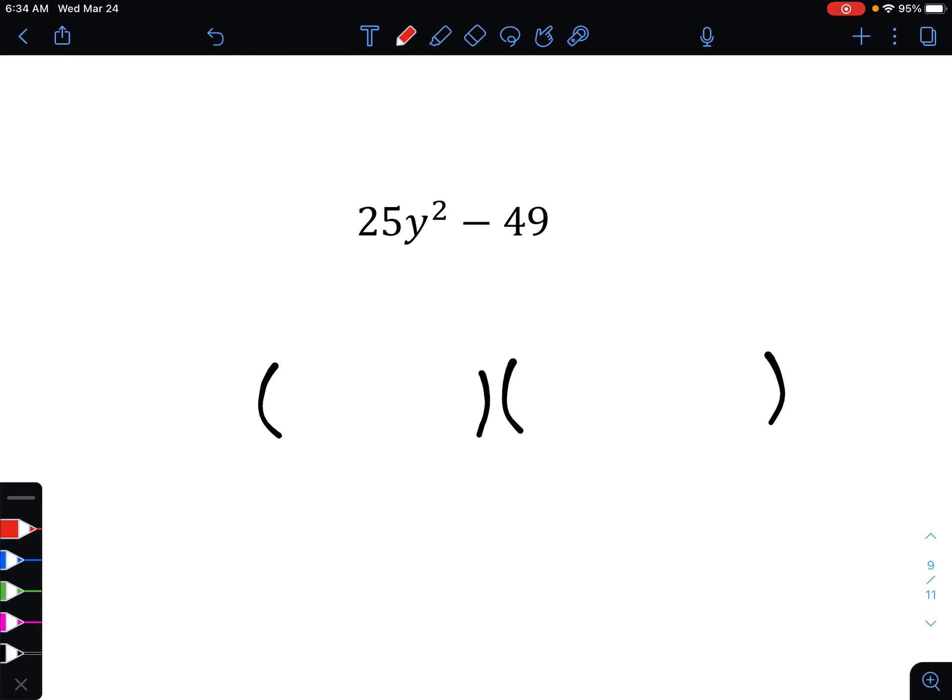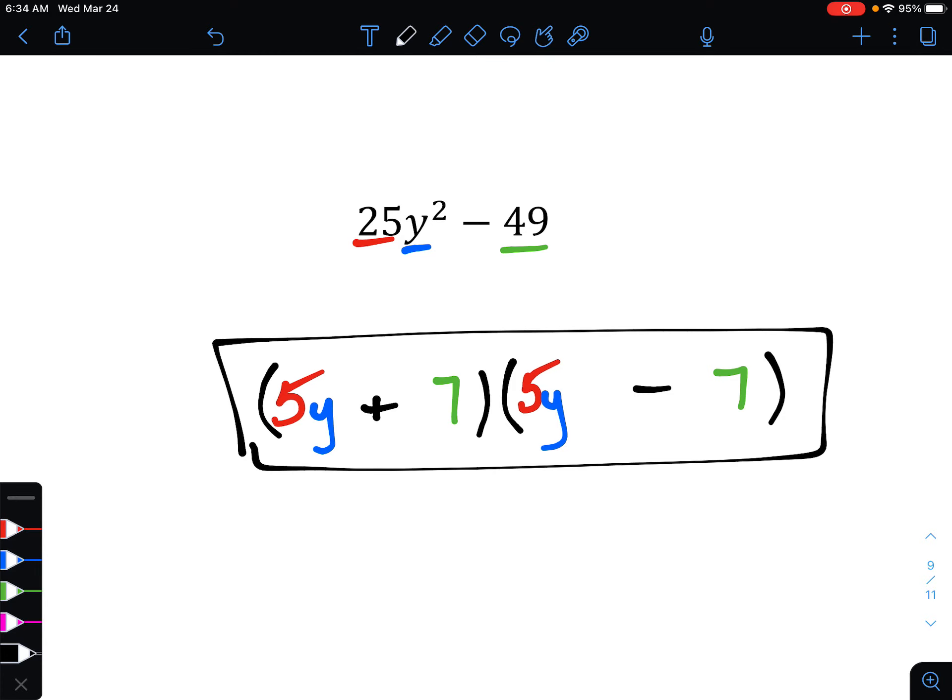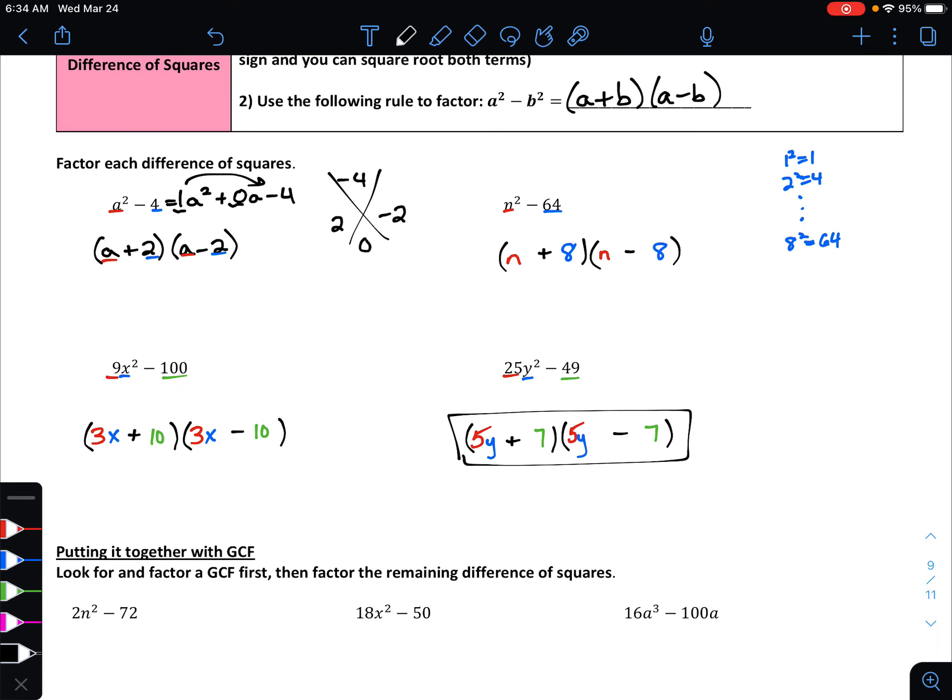All right. But this last example, very similar to the most recent example we just saw, we'll go through piece by piece, starting with the 25. That would have to be 5 squared, 5 times 5. For y squared, that's just the variable, so y. And finally for 49, that's 7 squared, 7 times 7. Make one of them positive, one of them negative. And you can see how quickly this type of factoring can go.